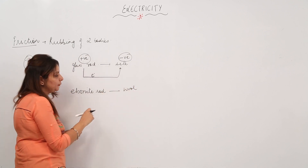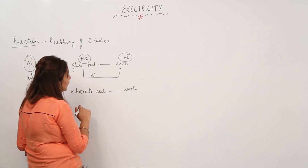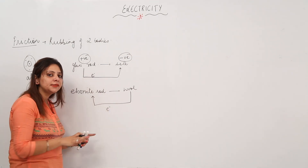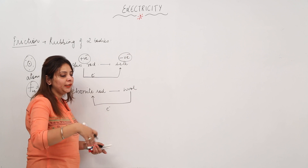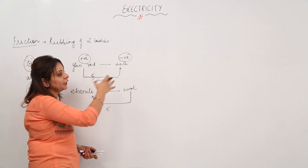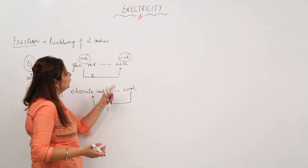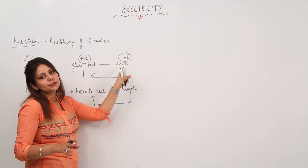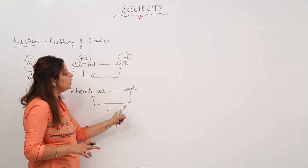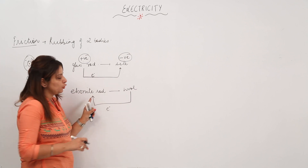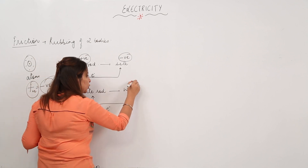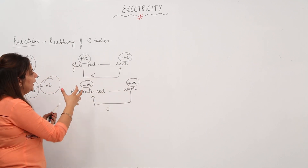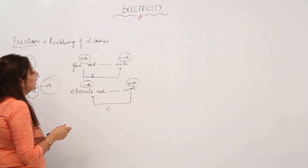Similarly, if we rub an ebonite rod with wool, electrons move from wool to the ebonite rod. This always happens in the same consistent way — it is not random. Whenever you rub a glass rod with silk, electrons move from glass rod to silk. Whenever you rub an ebonite rod with wool, electrons move from wool to the ebonite rod. So the wool acquires a positive charge and the ebonite rod acquires a negative charge.